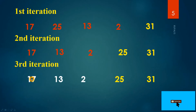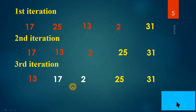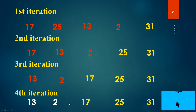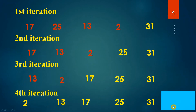In the third iteration, compare 17 with 13 — need to swap because 13 is less. Next, 2 with 17 — 2 is less, so swap. Now 17, 25, and 31 are in their correct positions. In the fourth iteration, compare 13 with 2 — 2 is less, so swap. Now we get the sorted array.